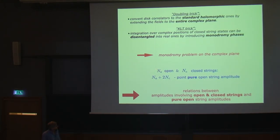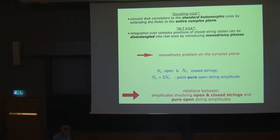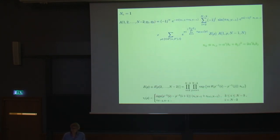This boils down to a monodromy problem on the complex plane. As a result, any mixed amplitude involving N_O open strings and N_C closed strings will essentially reduce to an (N_O + 2·N_C)-point pure open string amplitude, subject to monodromy phases. This gives relations between amplitudes involving both open and closed strings and pure open string amplitudes.